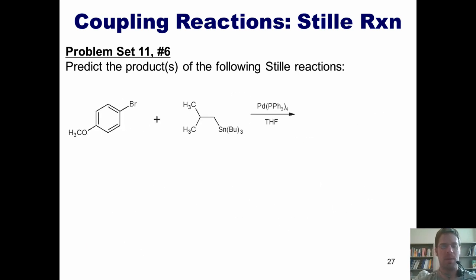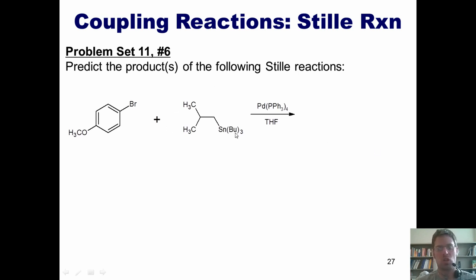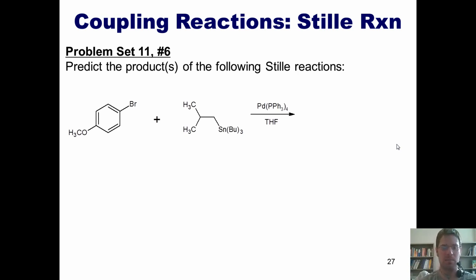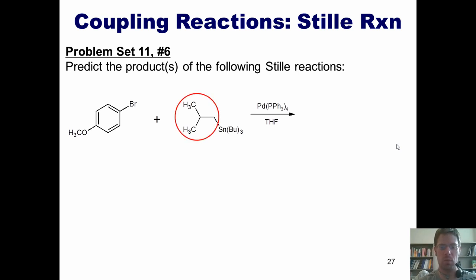In our first example, I've got this aryl bromide reacting with this stanane. This 'Bu' right here is an abbreviation for butyl. So remember, I've always got this tributyltin group attached to some other group. Whatever the other group is ends up replacing the halogen in my halide coupling partner. So the first question I ask is: what is the other group attached to my tin? It is this whole group right here.